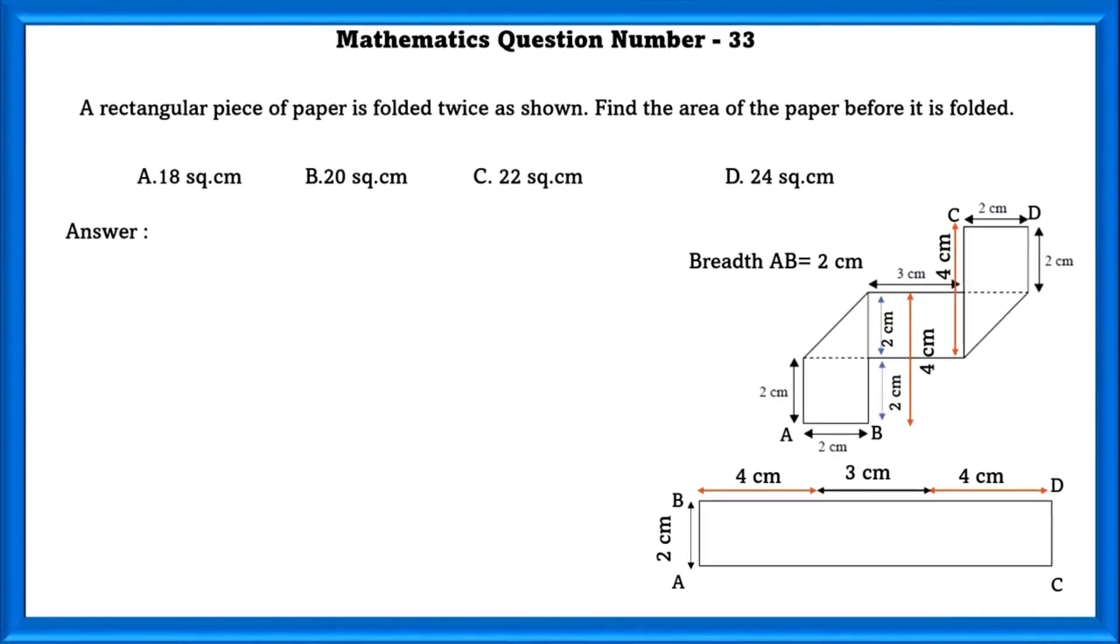When we unfold it, we get BD as 4 plus 3 plus 4 and BA as 2 cm and DC as 2 cm. The breadth of the rectangular piece is equal to 11 cm.